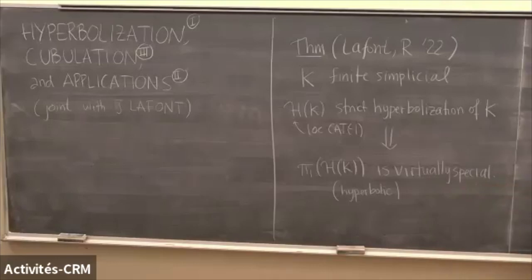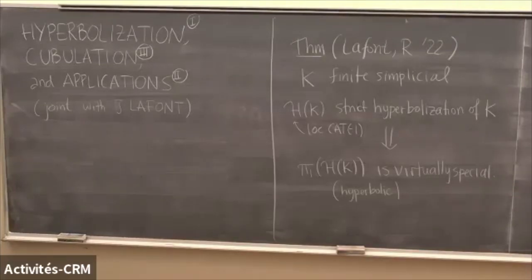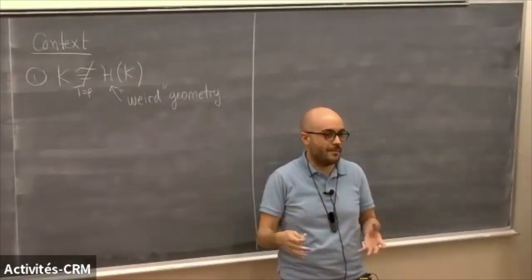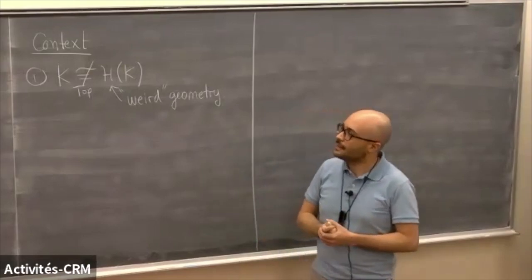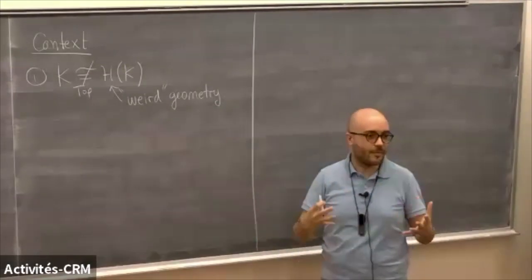Let me put the statement into context. First warning: K is not the same thing as H(K). I'm using hyperbolization not in the sense of low-dimensional geometry. This hyperbolization is not like a uniformization of a surface, not a hyperbolicization of a three-manifold. I'm not putting a hyperbolic structure on a given topological input — I'm drastically changing the topological input K into something new. This construction has been used in the literature to construct things that have some kind of weird geometry.